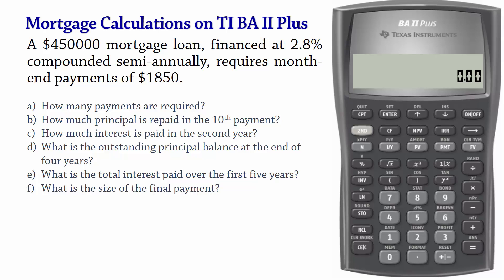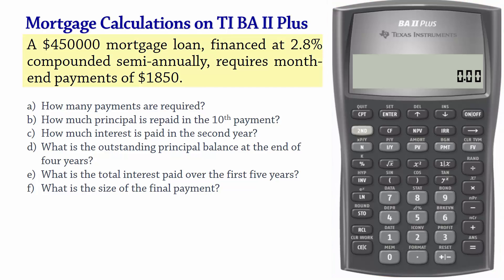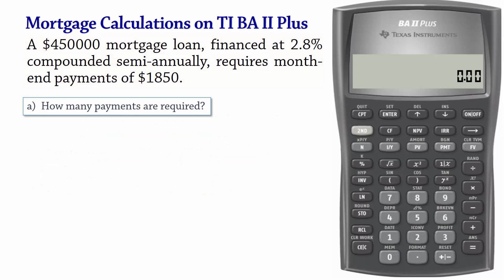Welcome. In this video, I'm going to use the BA2 Plus calculator to solve this amortization problem. A $450,000 mortgage loan financed at 2.8% compounded semiannually requires month-end payments of $1,850. How many payments are required?